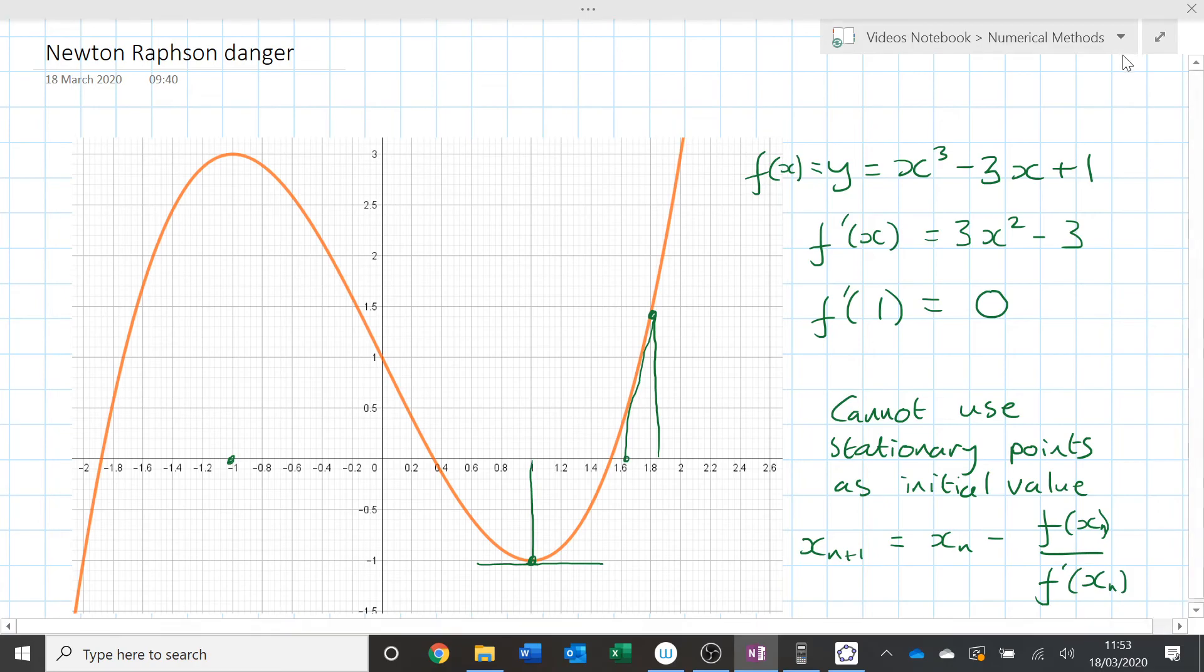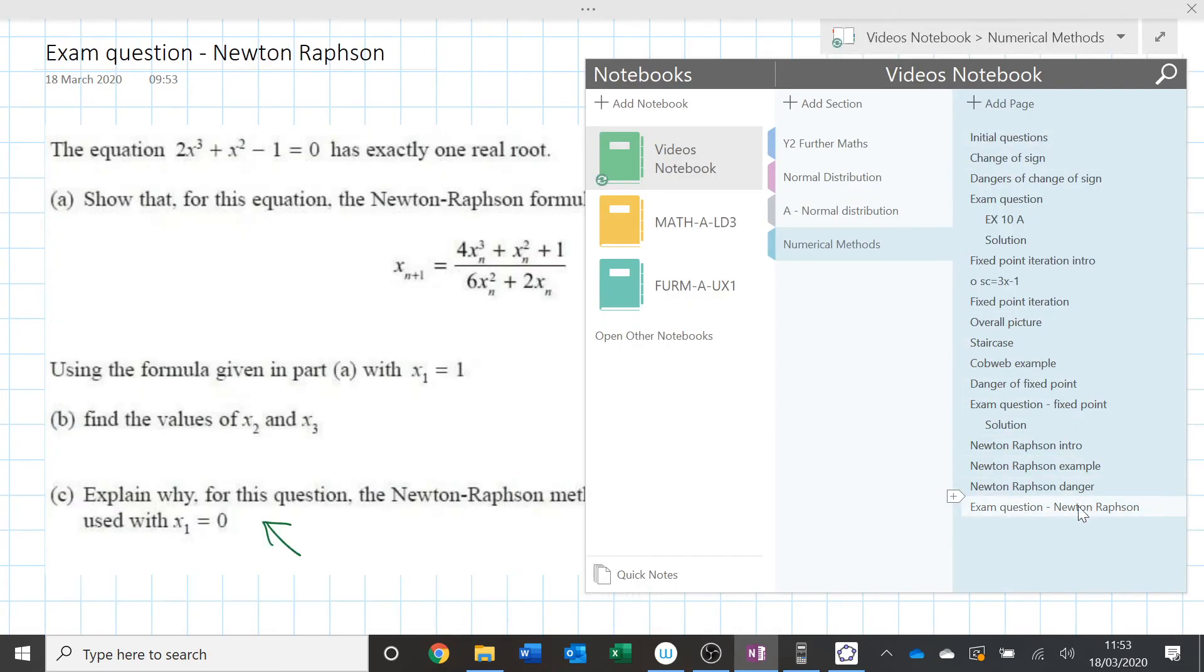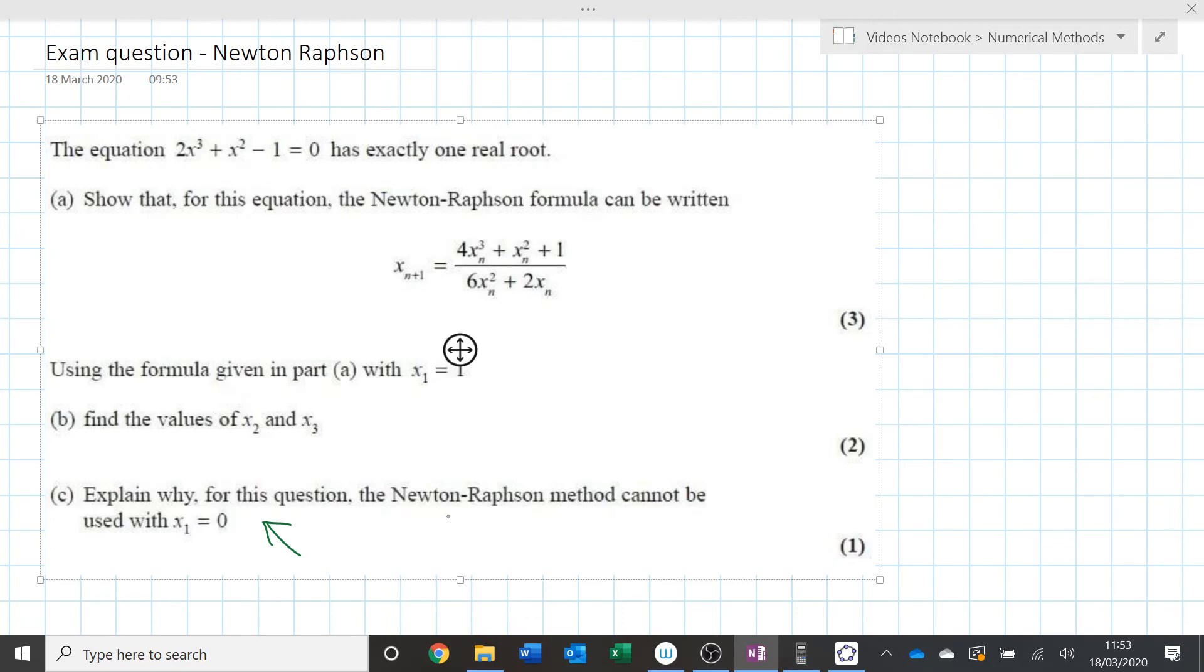So if we were doing this exam question, if you were well revised you'd go ah I know that Newton-Raphson doesn't work when the gradient is 0 because it's going to miss. I'd draw a little picture just to make sure I've explained it clearly. I would also at some point in this question I would have calculated f dash of x so I would substitute in x equals 0, get 0, say that it doesn't work in this equation, draw a little picture, say the tangent's not going to cross. I know it's just one mark but it says explain so they are expecting kind of full sentences and proper answers in this case.